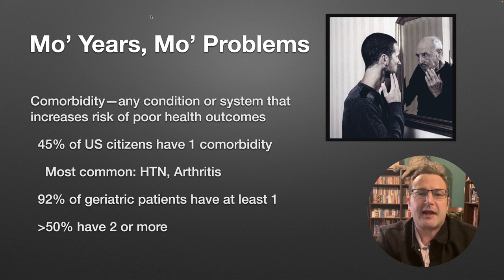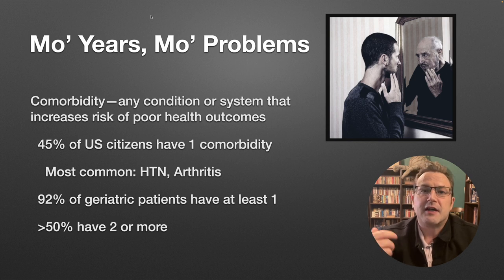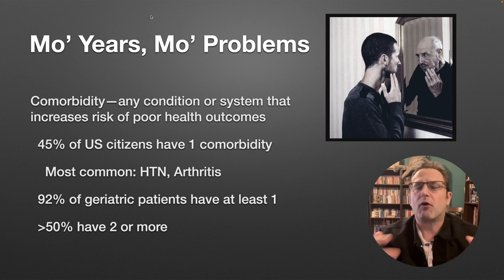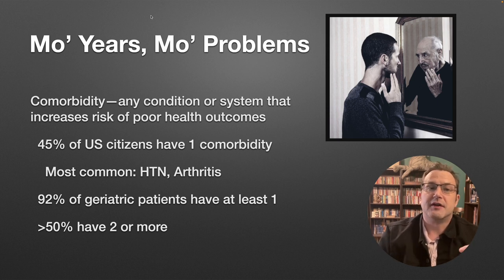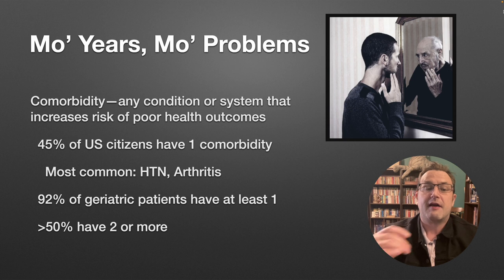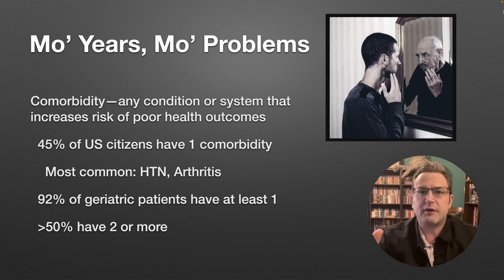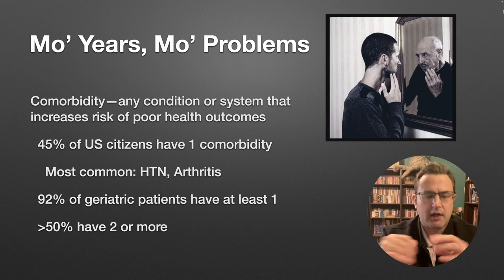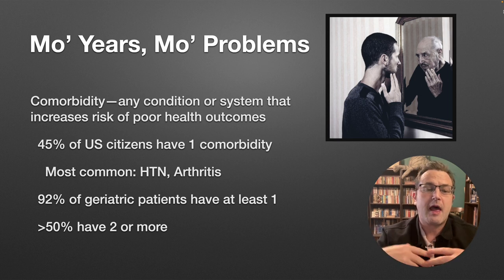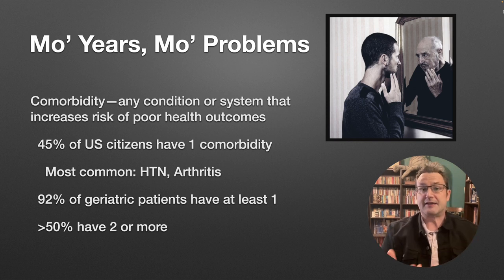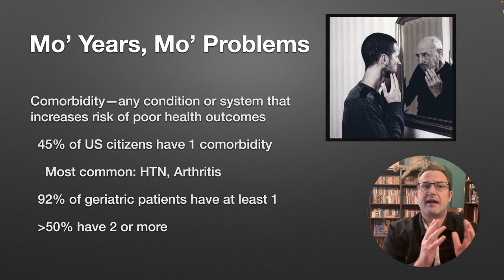Earlier in the course, I mentioned that the elderly were a disproportionately large strain on the healthcare system, and this is a large part of why. Remember, a comorbidity is any condition or system that increases risk of poor health outcomes. 45% of all U.S. citizens have a comorbidity — the most common ones are hypertension and arthritis. 92% of geriatric patients have at least one, so more than twice as many elderly patients have at least one comorbidity versus the rest of the United States.